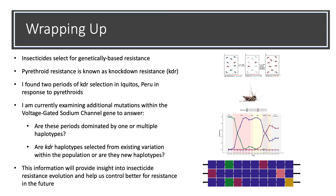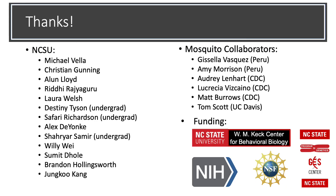To wrap up, KDR in mosquitoes is a problem. I have found two periods of KDR selection in Iquitos, which raised additional questions I am currently working to answer. Finally, this information will provide insight into insecticide resistance evolution and will help us better control for resistance in the future. I would like to thank all of the people and funding agencies who have made this work possible.